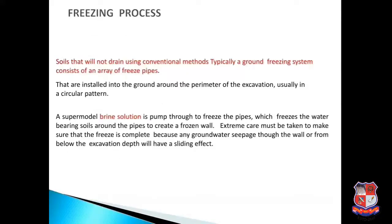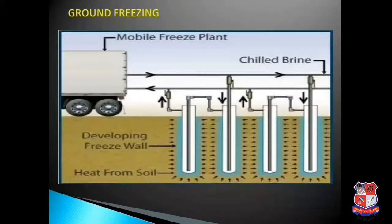Next is the freezing process, used for soil that will not drain using conventional methods. A typical ground freezing system consists of an array of freeze pipes installed into the ground around the perimeter of the excavation, usually in a circular pattern. A brine solution is circulated through the freeze pipes, which freezes the water-bearing soils around the pipes to create a frozen wall. Extreme care must be taken to ensure the freeze is complete, because groundwater seepage through the wall or from below the excavation depth will have a thawing effect.